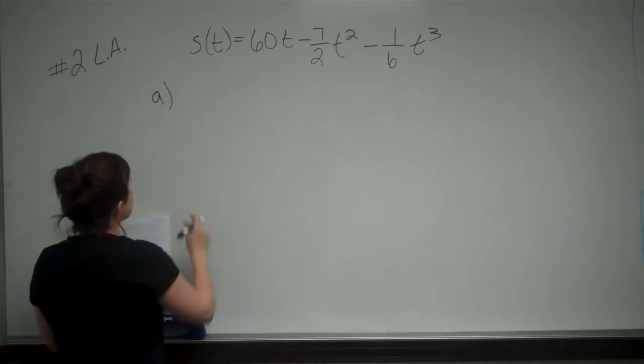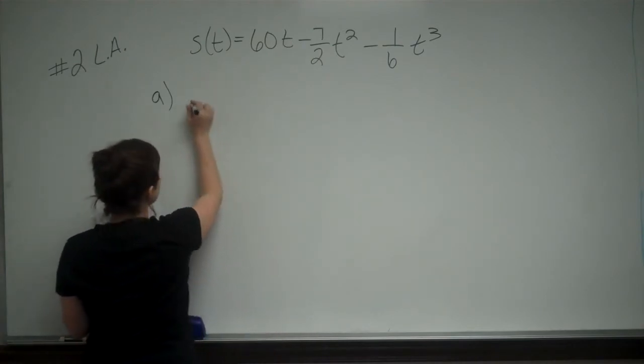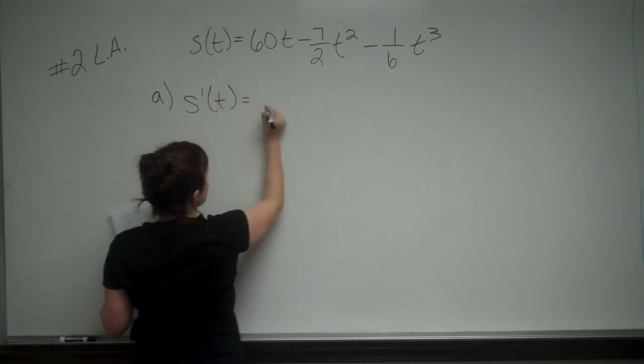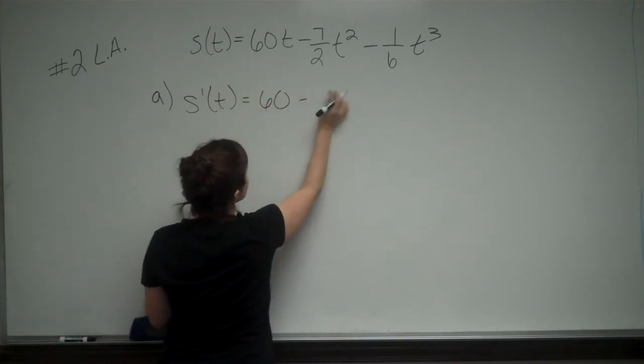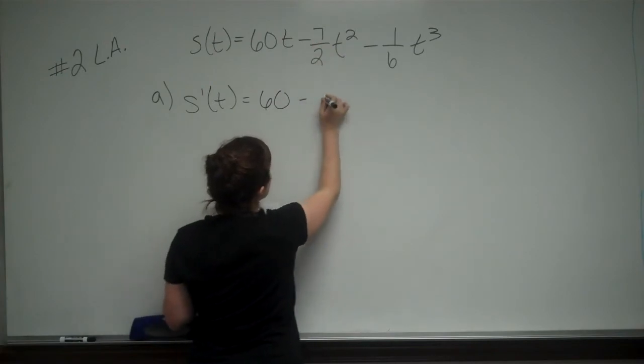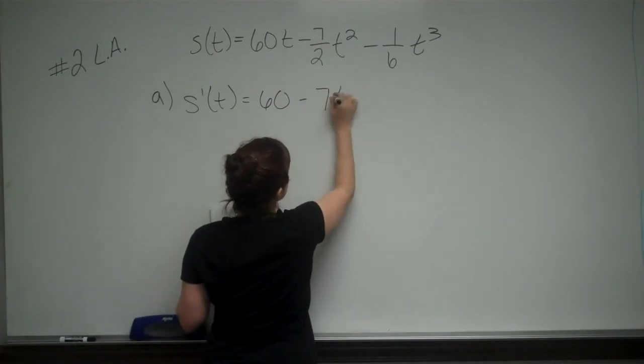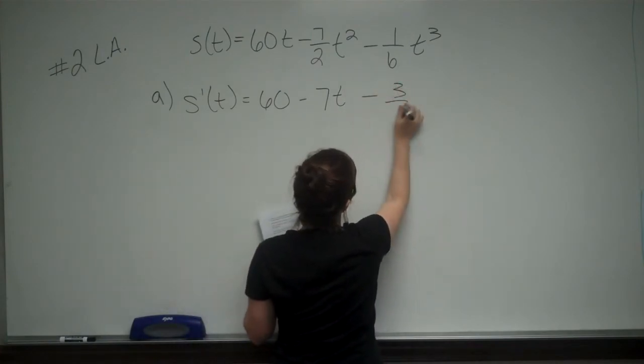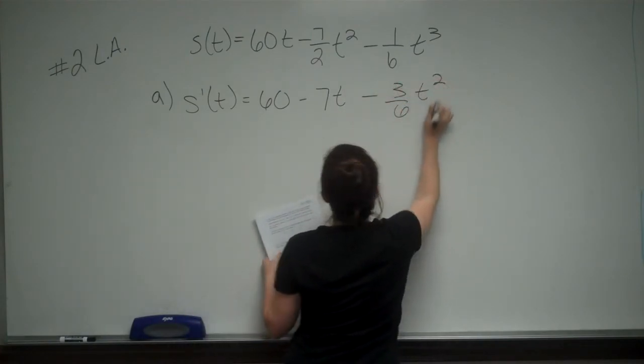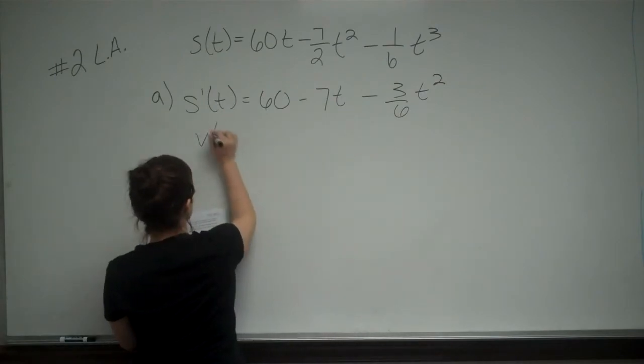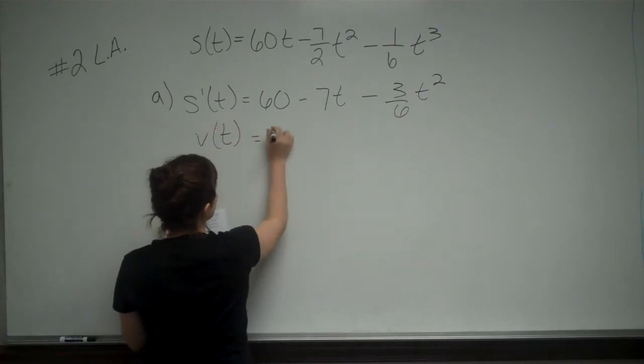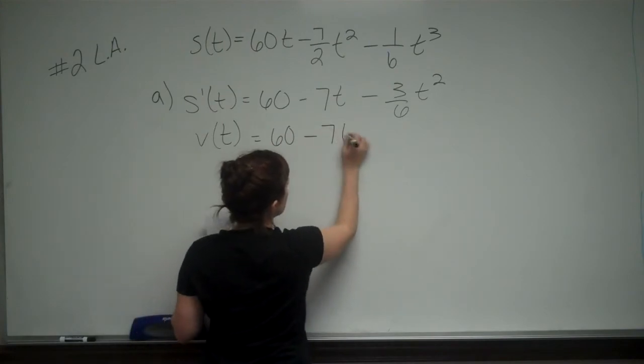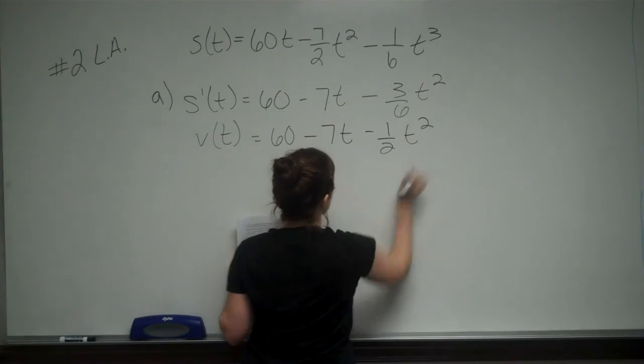Velocity is just the derivative of position, so we want to find S prime of T. We take the derivative, which gives me 60 minus 2 times 7 halves is negative 7T minus 3 over 6T squared. So my velocity equation is equal to 60 minus 7T minus 1 half T squared.